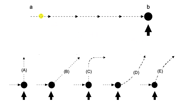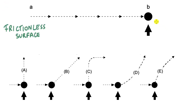Here we have a ball which is sliding from A to B on a frictionless surface. We can imagine that we are looking at the ball from the top. As the ball reaches point B, a sudden force acts on the ball. The question is to determine what will be the path of the ball after this sudden force acts on it at B.